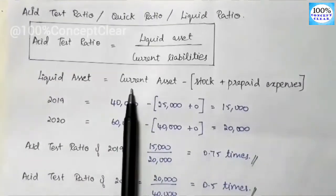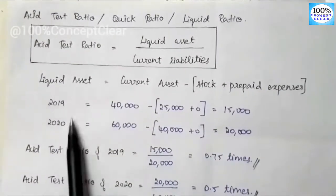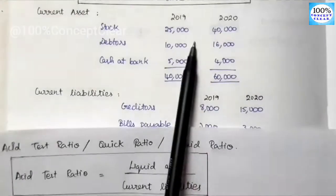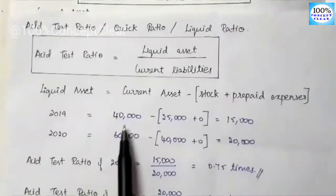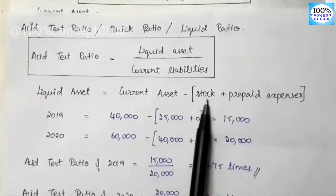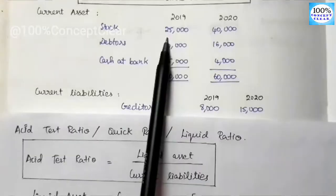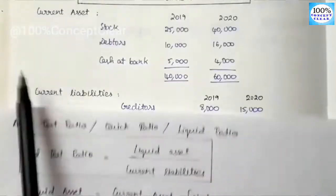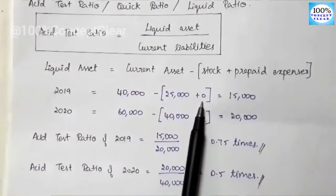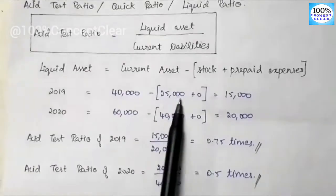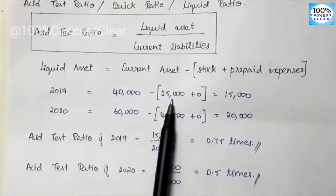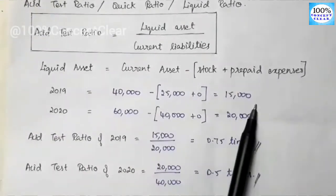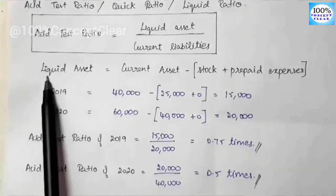For 2019: current assets are 40,000. Stock is 25,000. Prepaid expenses are 0. So liquid assets = 40,000 − (25,000 + 0) = 40,000 − 25,000 = 15,000. So for 2019, liquid assets are 15,000.